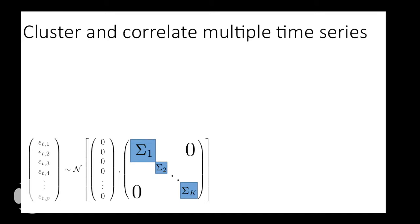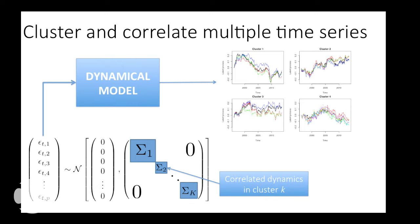Pushing this innovations vector through our dynamical model gives us clusters of correlated time series. This is a very different notion of clustering than what's typically done — typically people look at similarities in the observed process, which breaks down when you have lots of missing data. Here we're looking at correlation structure in the latent, unobserved process. Two regions fall in the same cluster if they're correlated, which could mean one trend is going up while the other goes down. It's an inherently different notion of clustering time series.